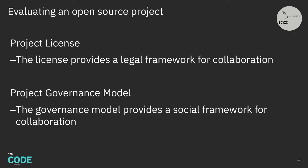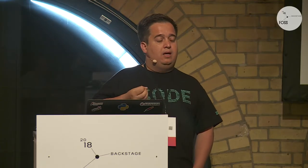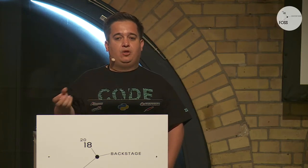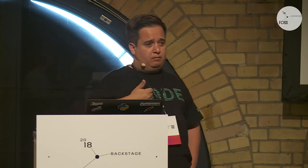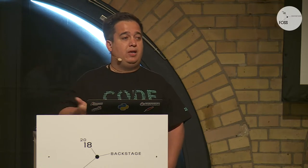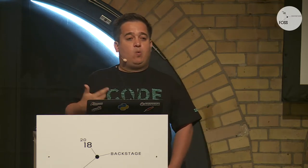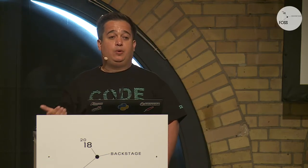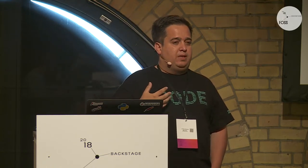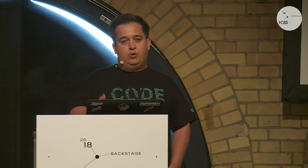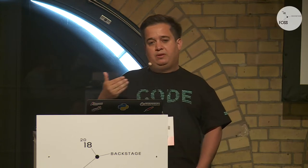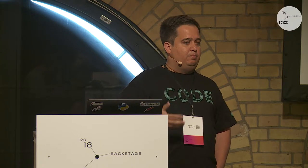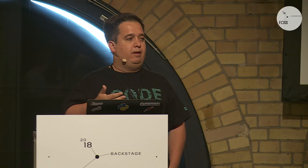When you look at a truly open source project, you want to understand two things. First, the project license — it tells you what you can actually do with that code: can you distribute it, can you incorporate it into a product, what are the requirements like notices? The license is a legal framework describing what you can and cannot do. Second, the governance — a social framework explaining how decisions are made, how the community is built, and how communities interact.